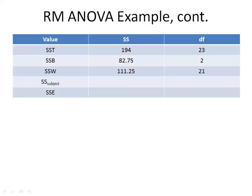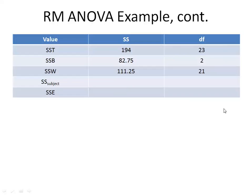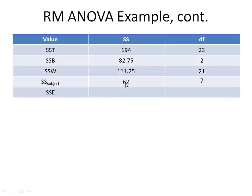From the previous lecture, you should be able to calculate SST, SSB, and SSW. We can place SS-subject at 62 with degrees of freedom of 7. SSE is found by subtracting 62 from 111.25, giving 49.25. Similarly, the degrees of freedom for error is 21 minus 7, which equals 14.